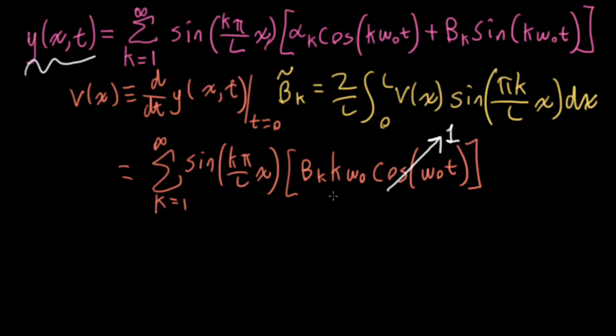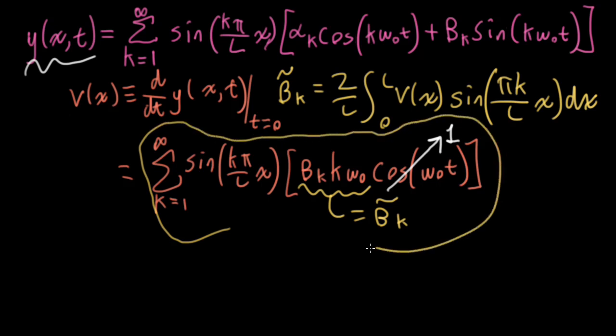So if I were to grab this section here and say that beta k times k omega naught is equal to beta k tilde, well, then the rest of this expression here would wind up looking like a Fourier series.